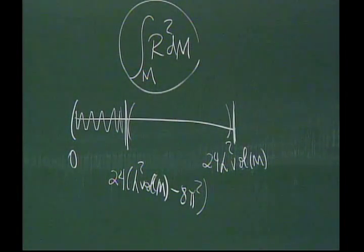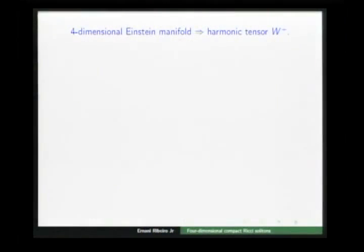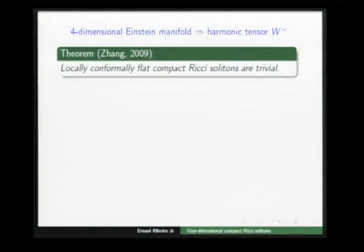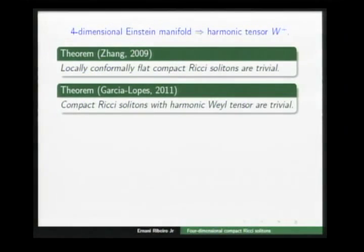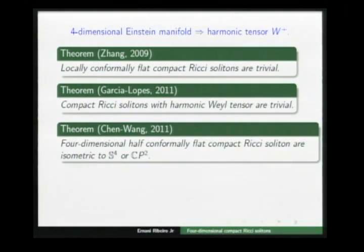Returning to the earlier problem: every four-dimensional Einstein manifold has harmonic self-dual Weyl tensor W⁺, and we want to know when the converse holds. In 2009, Zhang proved that every locally conformally flat compact Ricci soliton is trivial. Garcia-Lopez and Fernandez-Hughes proved that every compact Ricci soliton with harmonic Weyl tensor is trivial. In dimension four, Shen and Wang proved that four-dimensional half-conformally flat compact Ricci solitons are isometric to S⁴ or CP².